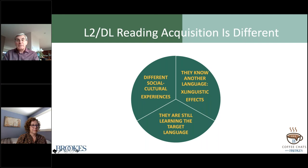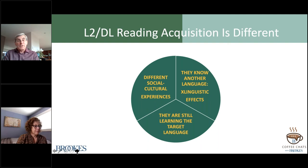To understand whether a dual language learner's reading development is typical or not, you also have to look at processes that are different for dual language learners compared to monolinguals. We highlight three: they have different social and cultural experiences; they know another language, which can produce cross-linguistic effects that are often facilitating reading development but are usually misinterpreted as interference; and they are still in the process of learning the other language. All of these are important when designing instruction and support for struggling readers.